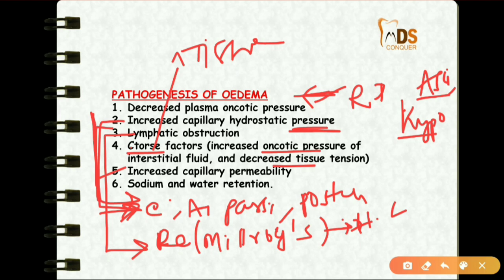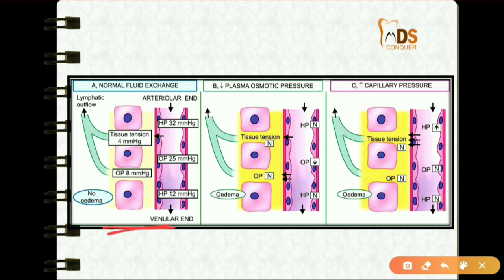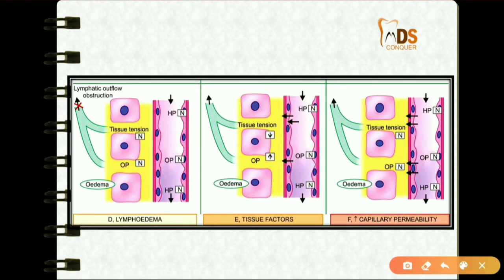The fifth and sixth causes are increased capillary permeability and sodium and water retention. In the diagram, you can see normal fluid exchange compared to decreased plasma osmotic pressure and increased capillary pressure, which drives more fluid into the extracellular space causing edema. Lymphatic flow obstruction causes lymphedema, and increased capillary permeability also causes edema.